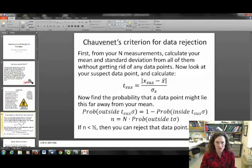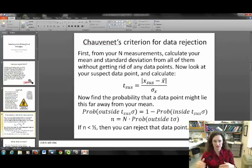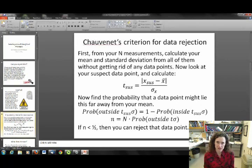So disclaimers aside, here's the way to use Chauvenet's Criterion for Data Rejection. First of all, let's say that you've taken n measurements, all of the same quantity, and you've calculated your mean and your standard deviation from all of the data points, including the bad or suspect data point. So now you look at your suspect data point and you calculate your t value for that. That's the absolute value of your suspect data point minus your mean, and then divide that by your standard deviation. And that will tell you how many standard deviations from the mean this is from your average.